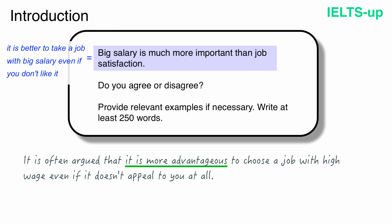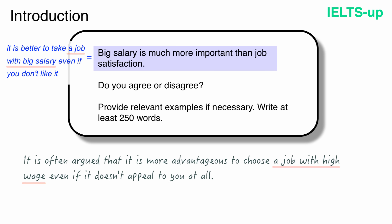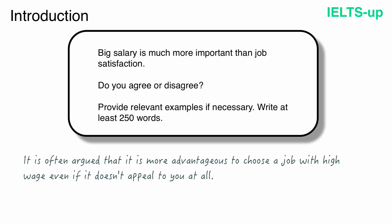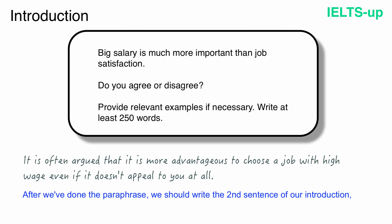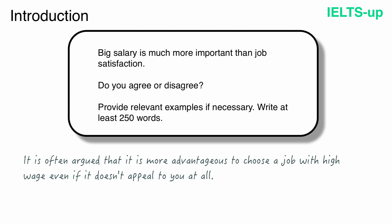'It is more advantageous' just means 'it's better.' 'A job with high wage' is a synonym for 'a job with big salary.' And 'even if it doesn't appeal to you at all' means 'even if you don't like it.' After we've done the paraphrase, we should write the second sentence of our introduction, where we say whether we agree or disagree with the statement.